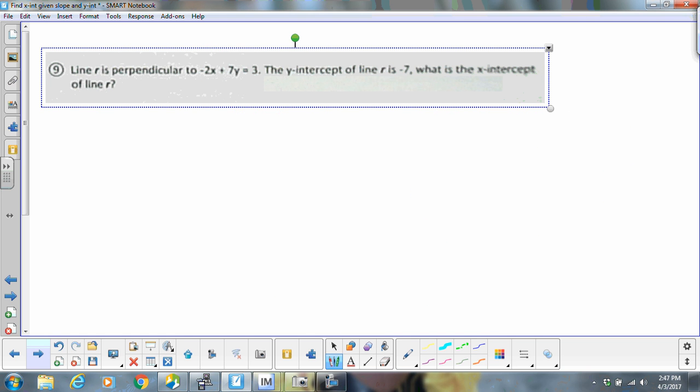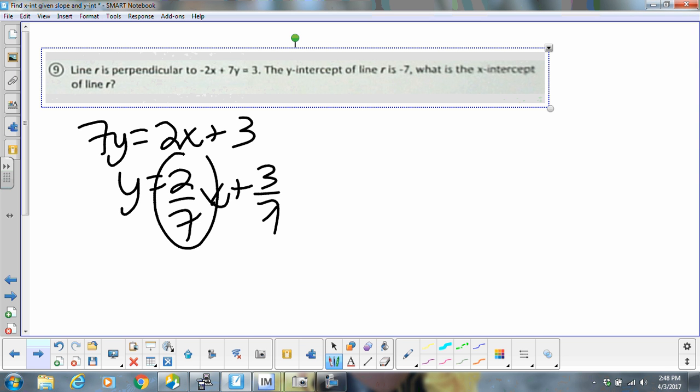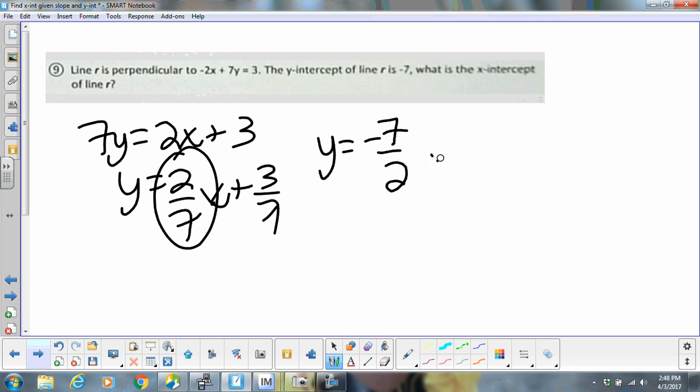And then the last one that I'm going to do is number 9. It's perpendicular. So we're still going to do the same thing. We're going to get y by itself. And since it's perpendicular, we're going to flip that and change its sign.